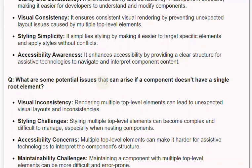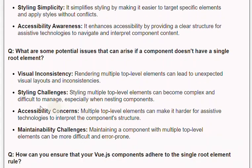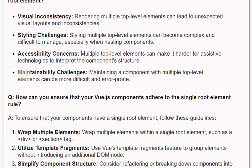Q: What are some potential issues that can arise if a component doesn't have a single root element? Visual inconsistency: rendering multiple top-level elements can lead to unexpected visual layouts and inconsistencies. Styling challenges: styling multiple top-level elements can become complex and difficult to manage, especially when nesting components. Accessibility concerns: multiple top-level elements can make it harder for assistive technologies to interpret the component structure. Maintainability challenges: maintaining a component with multiple top-level elements can be more difficult and error-prone.